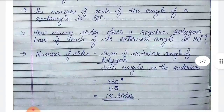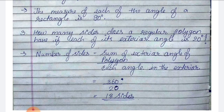Number 3: how many sides does a regular polygon have if each of its exterior angles is 20 degrees? We have a formula: number of sides equals sum of exterior angles of the polygon divided by each exterior angle. Sum of exterior angles is 360 degrees, divided by 20 degrees, which equals 18 sides.